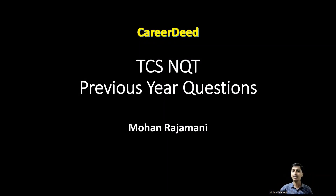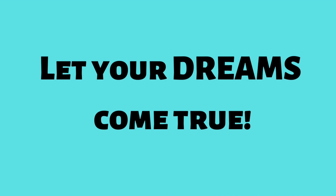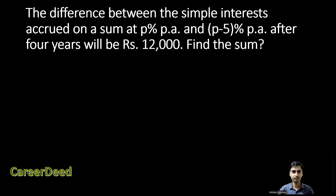In this session we are going to discuss previous year TCS National Qualifier Test numerical ability questions. Let's enter into the first question. The difference between the simple interest accrued on a sum at p percentage per annum and p minus 5 percentage per annum after four years will be rupees 12,000. Find this sum.